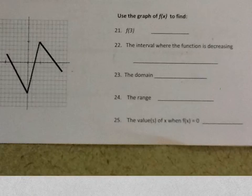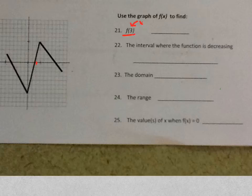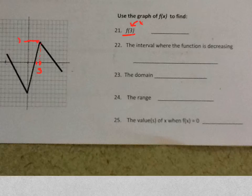Let's do some more function notation stuff and graphs. Let's find f of 3. If I go to 3 — remember that's the x value — which is right: 1, 2, 3, it's right there. There's 3, I go up to the graph, and I go over, and there's f of 3, which looks like 5.